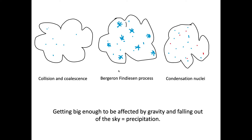This is the Bergeron-Findeisen process — I'll give you the simplest version, which will get you through the A-level. This is a cold cloud: we've got some frozen particles — some solid — and some liquid droplets. Simple version: the liquid water is attracted to the frozen water. These droplets are attracted to the snow and ice crystals, and the snow and ice crystals get bigger. As soon as a droplet hits a frozen particle, it freezes instantly, and the frozen particle gets bigger — until, guess what, it's big enough to be affected by gravity and falls out of the sky.